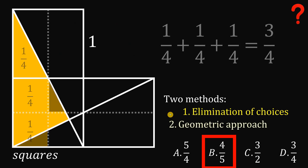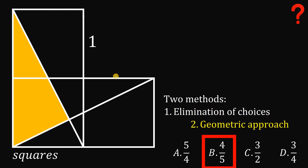Now let's use the geometric approach. We let the side of the square equal 2X. Since the marked point is the midpoint of the side, that segment equals X, and the bottom part is also 2X. Calling this angle theta, the vertical angle at the intersection is also theta. Calling one angle beta, the alternate interior angle below is also beta. Likewise, angle alpha corresponds to another alternate interior angle alpha below.